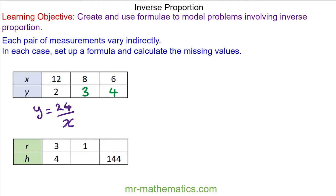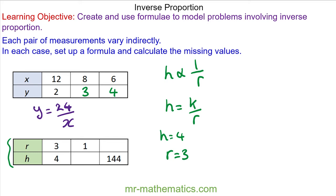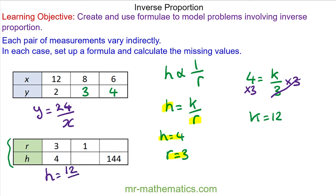Okay, let's try the next set of results. Again, we are told that h varies indirectly with r. We can model this relationship using the value of k. We'll substitute in when h is equal to 4 and r is equal to 3. So we have 4 is equal to k divided by 3. We'll multiply both sides by 3, so we're left with k is equal to 12. So our model is h is equal to 12 divided by r.